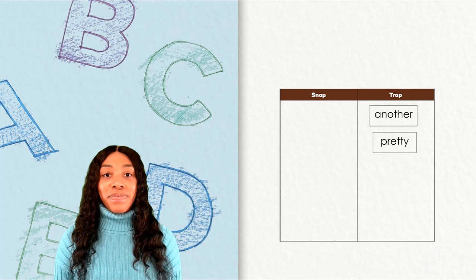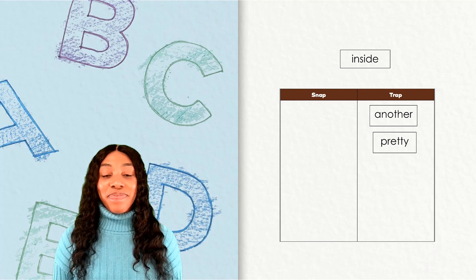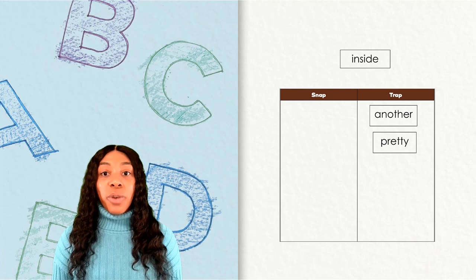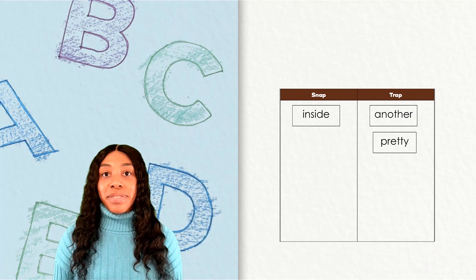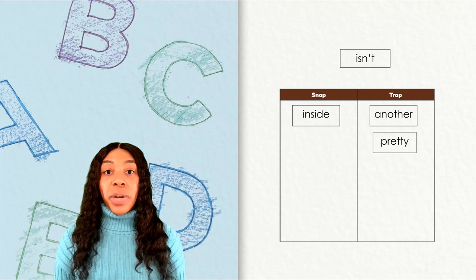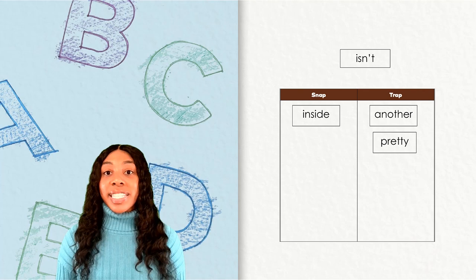Here's our next word: inside. I hear two syllables in this word. First, we see a closed syllable 'in.' Next, the syllable 'side' has a magic E, which should make the I sound like it does. This word is a snap word. Our next word is 'isn't.' This word is a closed syllable with a contraction. We say all the letter sounds that we see. 'Isn't' is a snap word.